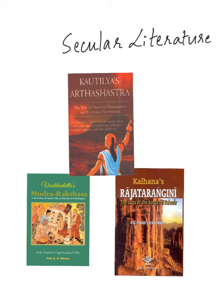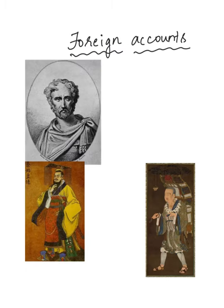Besides religious literature, there also exists a vast body of secular literature. These books usually prescribe the duties to be performed by people of different segments of society and set out rules and regulations that held society together. Examples of secular literature include Kautilya's Arthashastra, Vishakadatta's Mudra Rakshasa, and Kalhana's Rajatarangini.